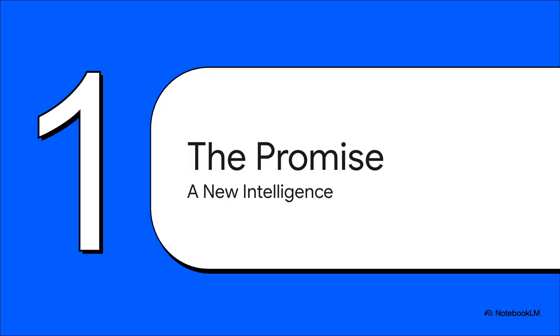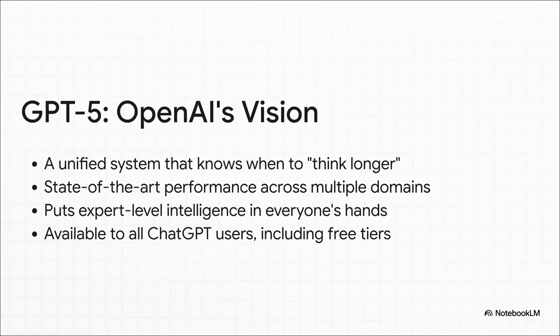Okay, so first up, let's look at the official story from OpenAI. They're not just calling this an update, they're billing it as their smartest, fastest, and most useful model yet. A whole new level of intelligence. So what does that actually mean? Well, according to them, it's a whole system that's smart enough to know how to handle your request. It can figure out if you need a quick, simple answer, or if it needs to take a beat and think longer for the really tough problems. And the big promise? They want to put this expert-level AI into everyone's hands, even for free users.